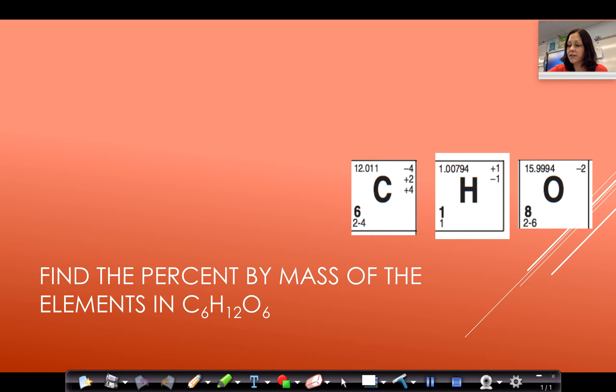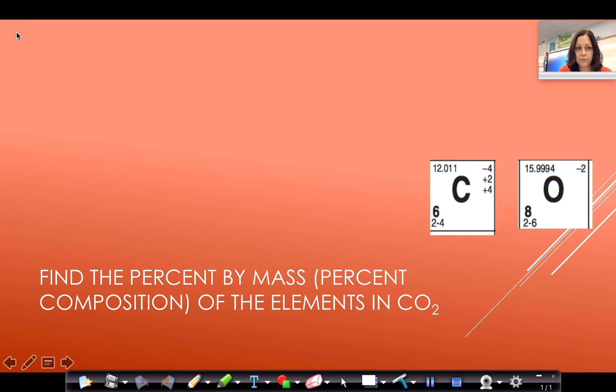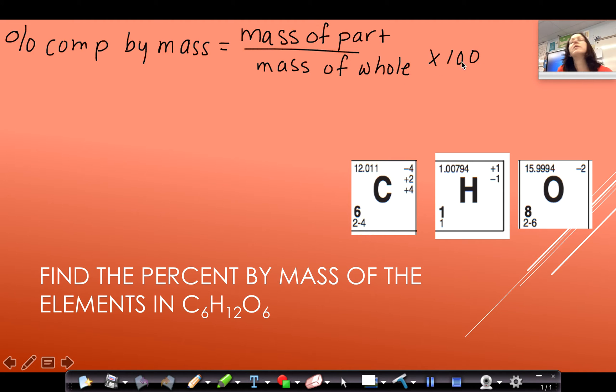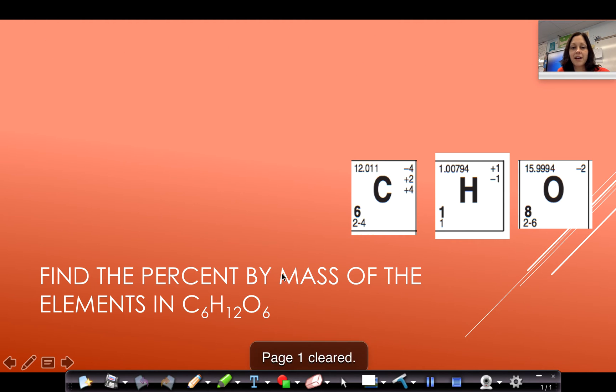And it says that percent composition by mass equals mass of the part over mass of the whole times 100. So this is the formula you're always going to use and it's pretty much just like any other percent where it's part over whole times 100. This is just the regular percent formula that you use in math and in any other time you want to find percent.